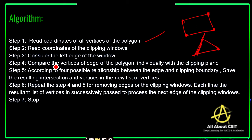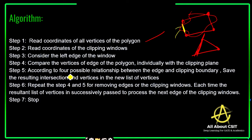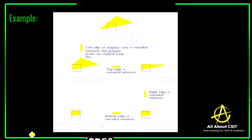Consider the left edge of the window first. Compare the vertices of each edge of the polygon individually with the clipping plane, according to the four possible relationships between edges and the clipping boundary. Save the resulting intersection points and vertices in a new vertex list. Repeat this step for each edge of the clipping window — each time, the resultant list of vertices is passed to process the next stage.